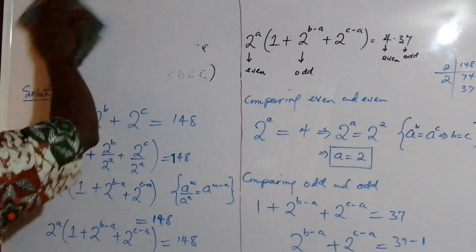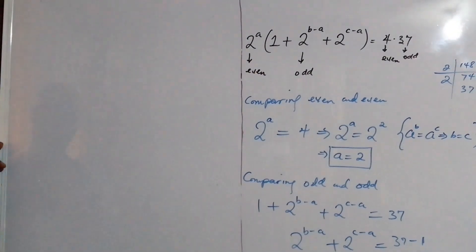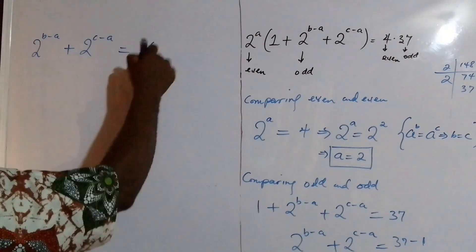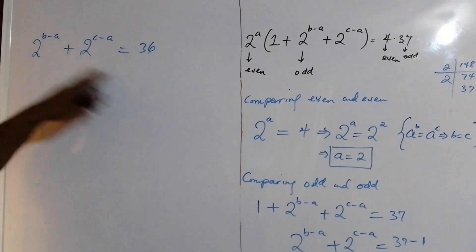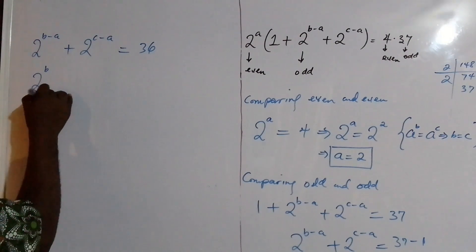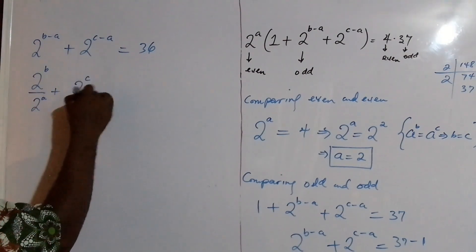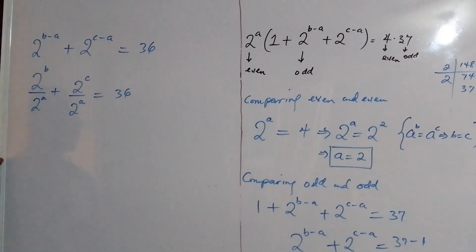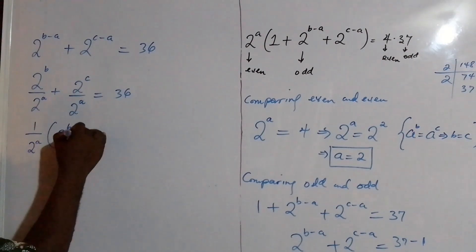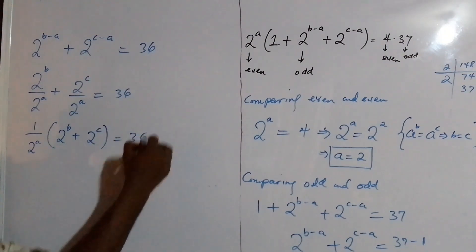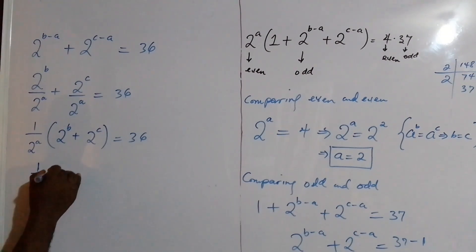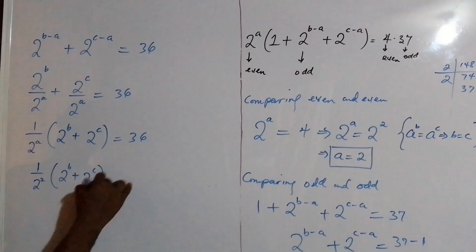Moving on, we have 2^(B−A) plus 2^(C−A) equals 36. I'm going to rewrite this as 2^B over 2^A plus 2^C over 2^A equals 36. Factoring out 1 over 2^A, we get (1/2^A) times (2^B plus 2^C) equals 36. And don't forget that A equals 2, so this becomes (1 over 2^2) times (2^B plus 2^C) equals 36.